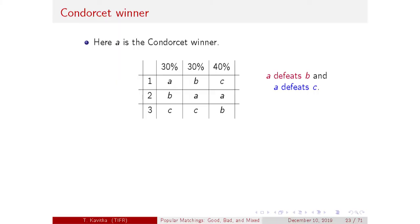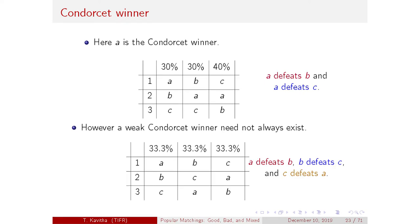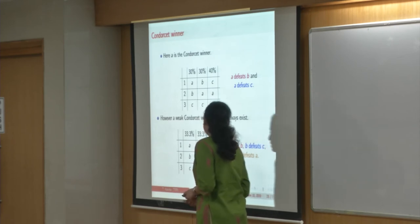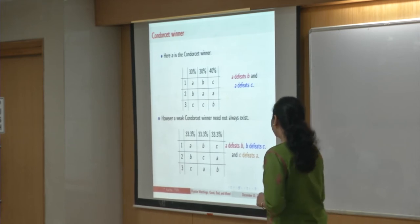In an example with three candidates A, B, C: 30% rank A top, B second, C third; another 30% rank B top, A second, C third; the remaining 40% rank C top, A second, B third. A defeats B and A defeats C in head-to-head elections, so A is the Condorcet winner. Unfortunately, weak Condorcet winners need not always exist. In the symmetric cyclic preference example where one-third each prefers A>B>C, B>C>A, C>A>B, we get A defeats B, B defeats C, and C defeats A — so no weak Condorcet winner exists.